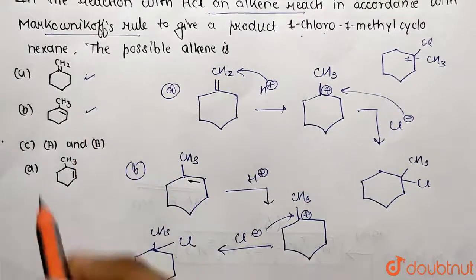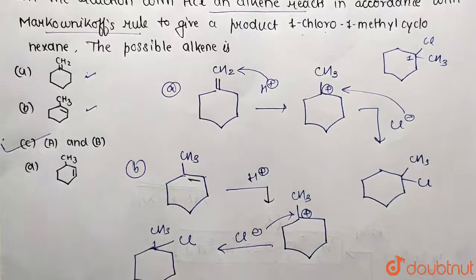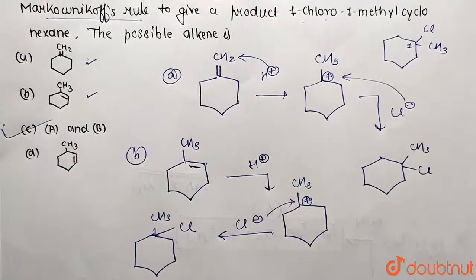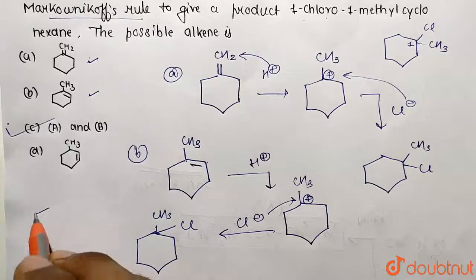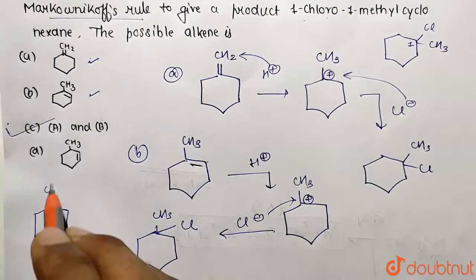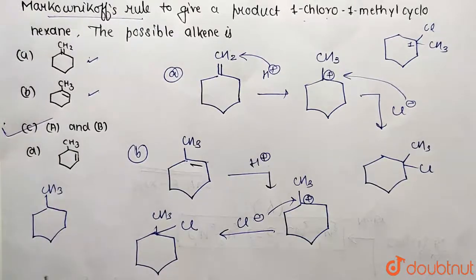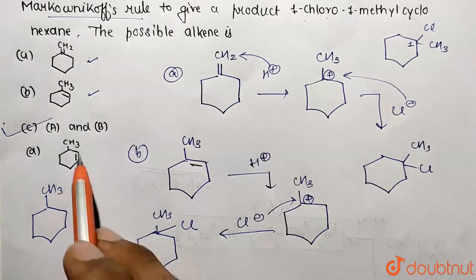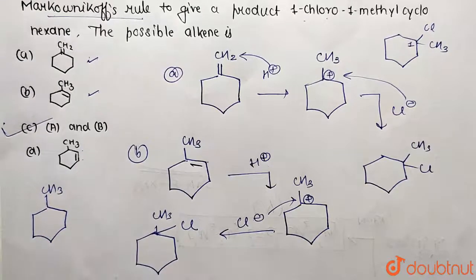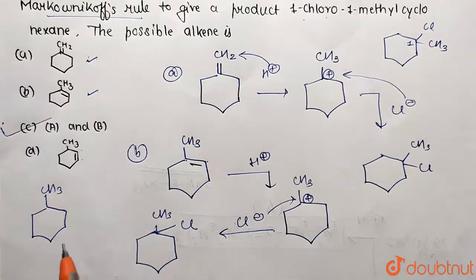So what is the answer? Option C states both first and second yield the required product. In the actual Option C structure shown, this contains CH3 group previously over here. Carbocation can be formed at which position? Either at this position or at this position.